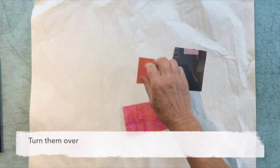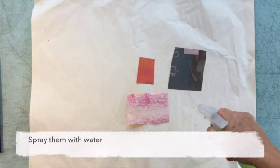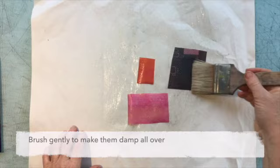Turn them over, this is really important, you're working with the back of the papers and then just make them damp with a bit of water from a spray bottle and use a brush to spread it evenly. Make sure they're nice and damp all over.